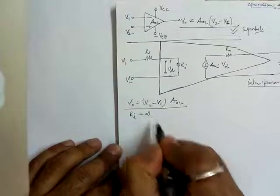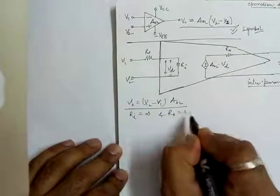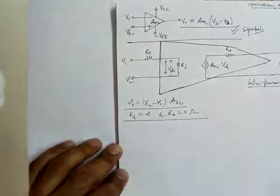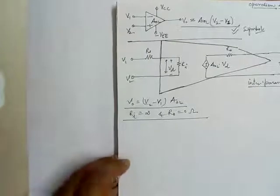We have seen that Vout equals (V2 minus V1) × AOL when Ri equals infinite and Rout equals zero. We have already discussed this.